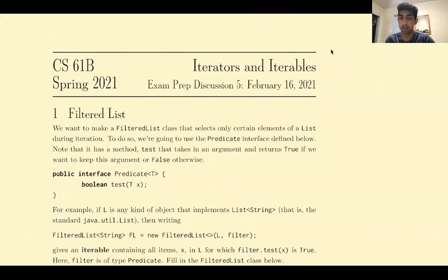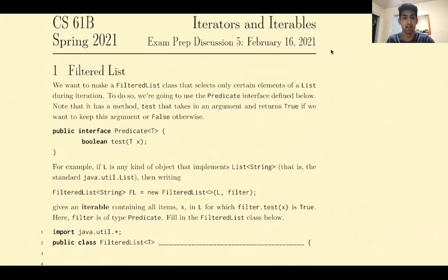So we want to make a FilteredList class that selects only certain elements of a list during iteration. To do so, we're going to use the predicate interface defined below. Note that it has a method, test, that takes in an argument and returns true if we want to keep this argument or false otherwise. We have this interface Predicate, and we're somehow going to use it to tell us which objects in the list to keep or discard during iteration.